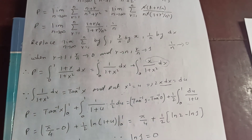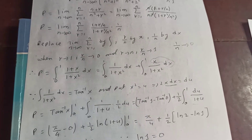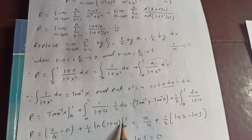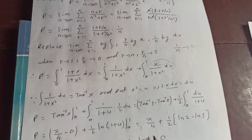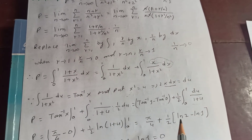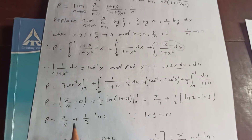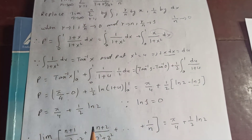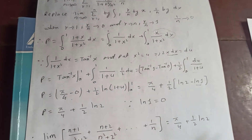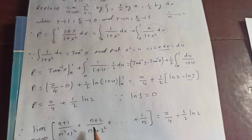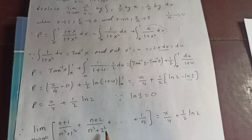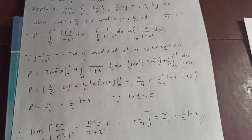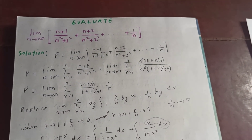This second integral gives log of 1 plus u, evaluated from 0 to 1. So P equals tan inverse of x from 0 to 1, plus 1 by 2 times log 2 minus log 1. Therefore P equals pi by 4 plus 1 by 2 log 2, since log 1 is 0. Our final answer is: the limit as n tends to infinity of n plus 1 over n squared plus 1 squared plus n plus 2 over n squared plus 2 squared, and so on, equals pi by 4 plus half log 2.